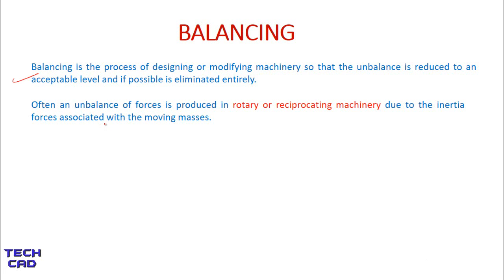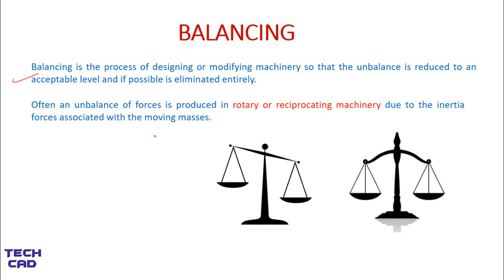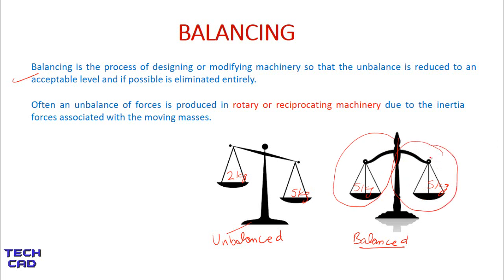Let's understand balancing with the help of a suitable diagram — a balancing scale. This is an unbalanced condition: here we have a 5 kg weight and here we have a 2 kg weight. But when we have equal weights — 5 kg on both sides — this is a balanced condition. Both weights are equal and opposite to each other, so the system is balanced.